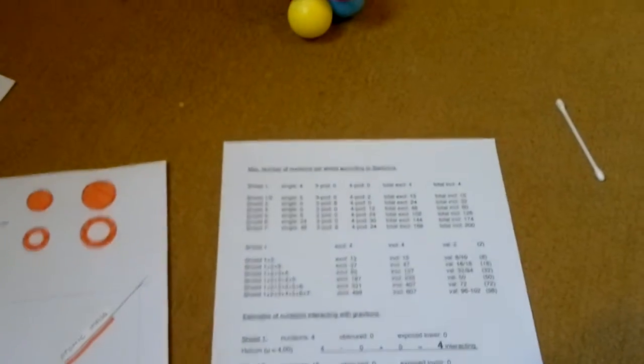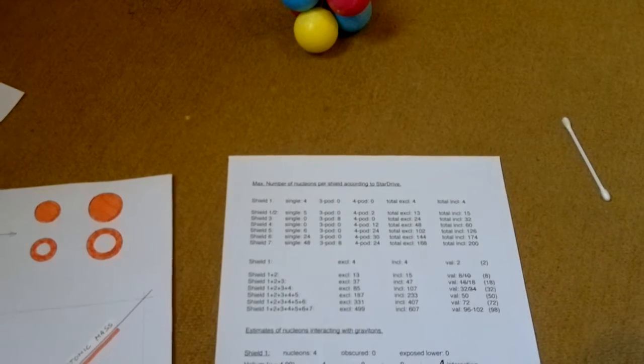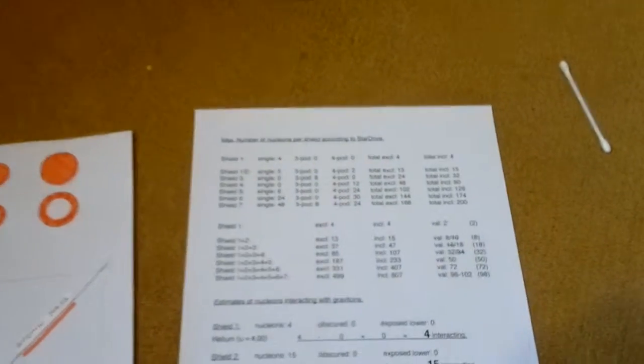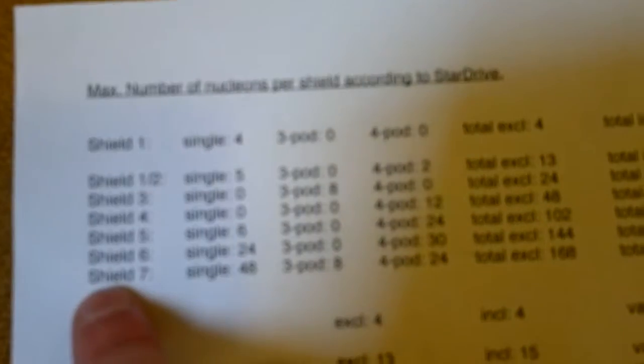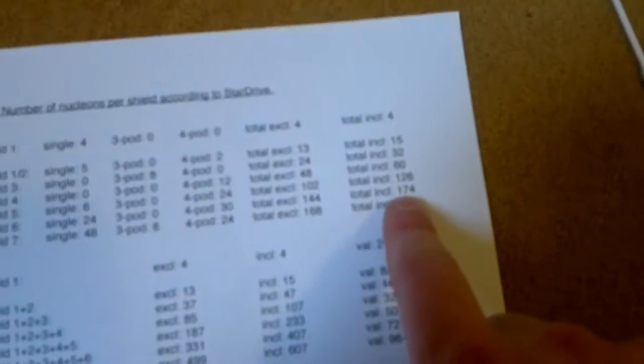So, having that in hand, I can count the number of nucleons on the outer shields. So, shield 7, outer shield 7, has 200 nucleons. And shield number 6, with the 72 valence shield 6, has 174 nucleons.